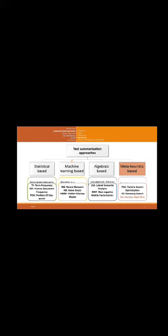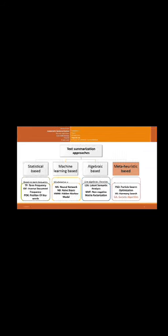Finally, we have metaheuristic-based approaches that detect summarization as an optimization problem. Some metaheuristic methods include Particle Swarm Optimization, Harmony Search, and Genetic Algorithm. The process of automatic summarization starts with an original text; the first step is pre-processing which includes sentence and word segmentation, stop word removal, and stemming. Then sentence scoring assigns a score to each sentence, and sentence selection picks sentences with the highest score to create the final summary.